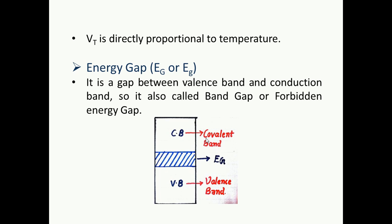Next is your energy gap. The notation is E subscript G — sometimes with capital G and sometimes with small g, so don't get confused when you see different notations. It is the gap between the valence band and the conduction band, so it is called the band gap or forbidden energy gap. Looking at the diagram: the upper portion is your conduction band, indicated in red, and the lower portion is your valence band. The space between these two bands is called the energy gap.